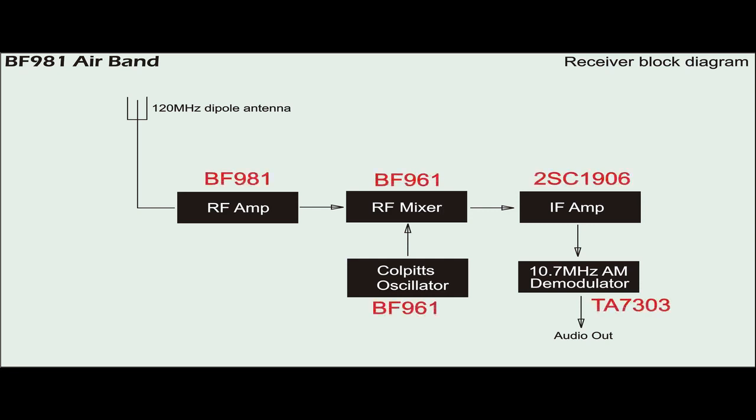DG MOSFET type BF981 is used to form an RF amplifier. Two BF961 are used to form local oscillator and RF mixer. TA7303 demodulates the FM intermediate frequency, which is amplified by the 2SC1906.